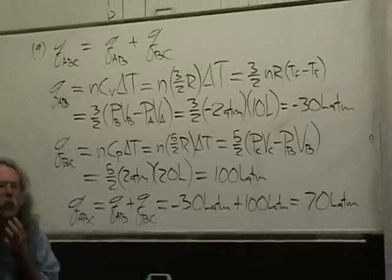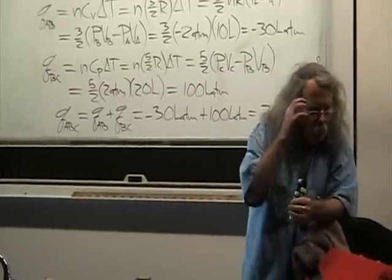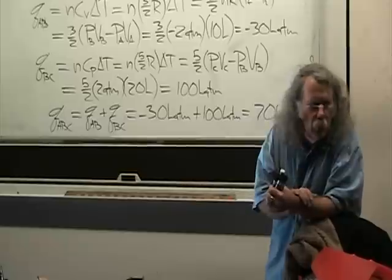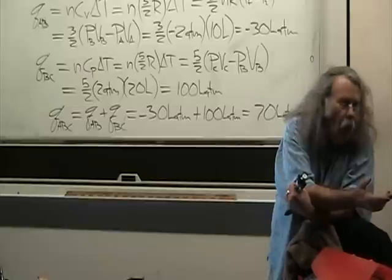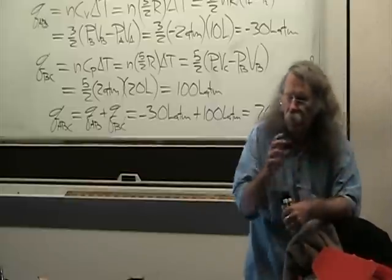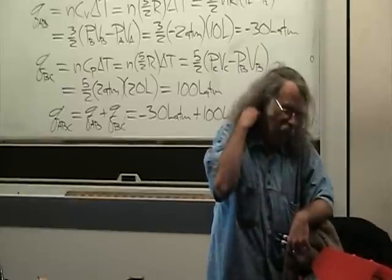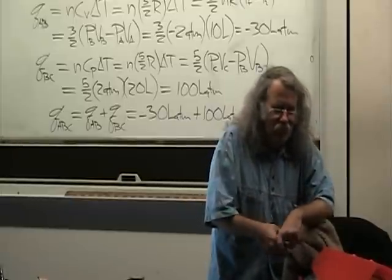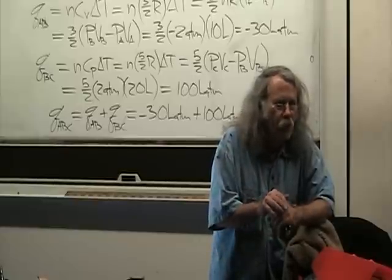A student mentions getting different numbers. The instructor clarifies: the actual midterm exam used a different question from this practice midterm — same type of question but with different numbers. The student confirms they understood the method correctly but had different values because the actual midterm differed from the practice midterm being reviewed here. The instructor confirms they are going over the practice midterm and that the actual exam will have the same question structure but different numbers.